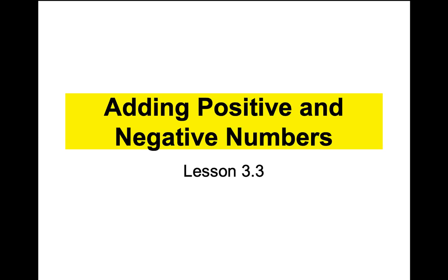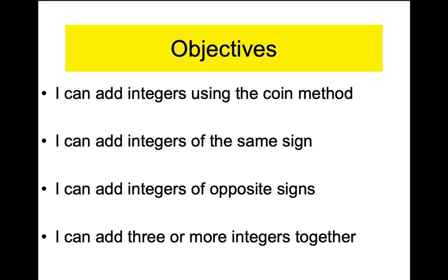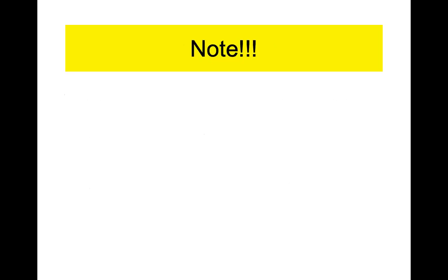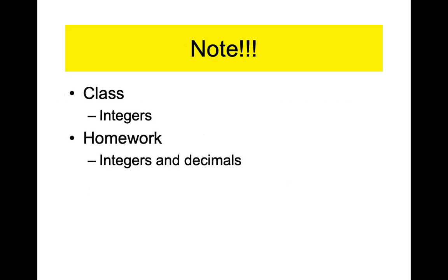Here we go. Today we'll do adding, tomorrow we'll do subtracting. This class is going to be on integers. The homework will include decimals — I choose not to throw decimals into the class, just nice friendly numbers. But the homework will include larger integers and decimals, so be prepared to do a little bit of scratch work. Also, for tonight's homework, this will be the last day that you see the negative written above and to the left. After today, the negative moves down — we never see it that way again.